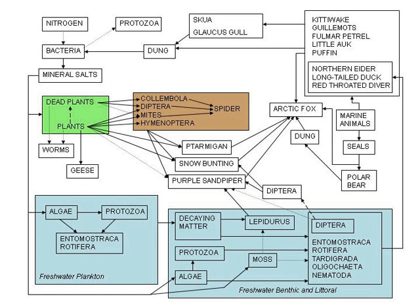It is possible to model the progress of most infectious diseases mathematically to discover the likely outcome of an epidemic or to help manage them by vaccination. This field tries to find parameters for various infectious diseases and to use those parameters to make useful calculations about the effects of a mass vaccination program.